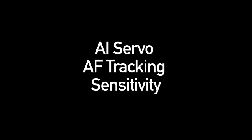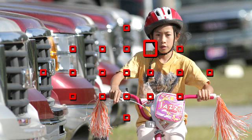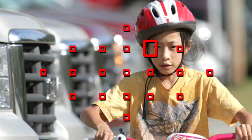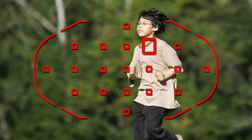AI Servo AF Tracking Sensitivity lets you adjust the camera's sensitivity to sudden changes when tracking a moving subject in AI Servo AF. The Fast setting means the camera will refocus almost instantly if the AF point leaves your subject or something comes between you and your subject. The Slow setting means the camera will pause for a moment if this happens.